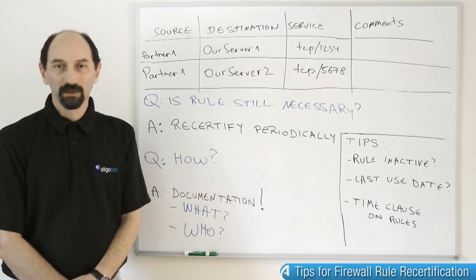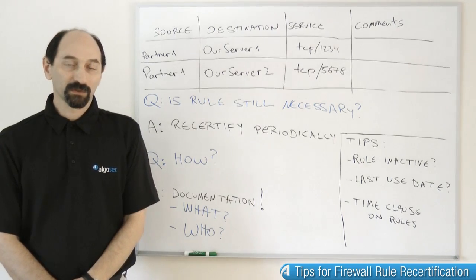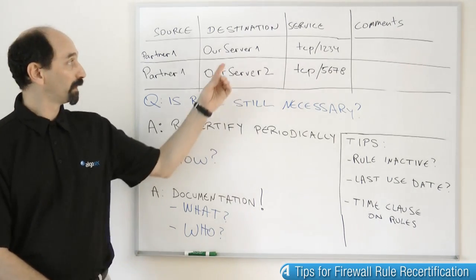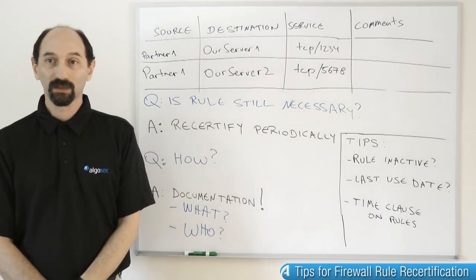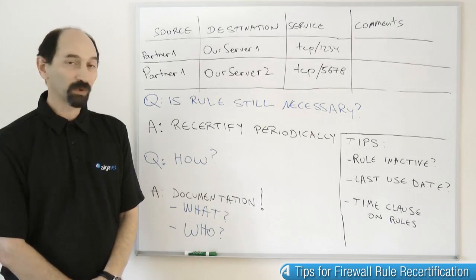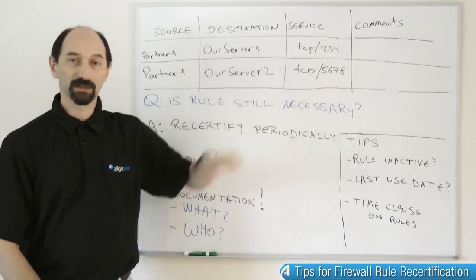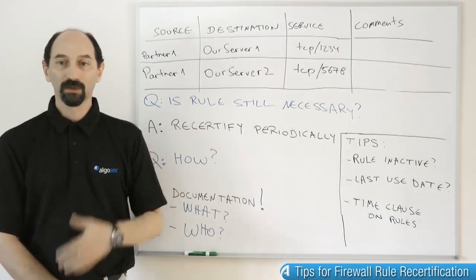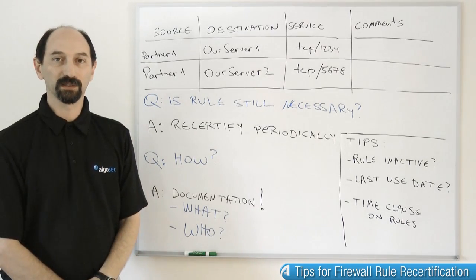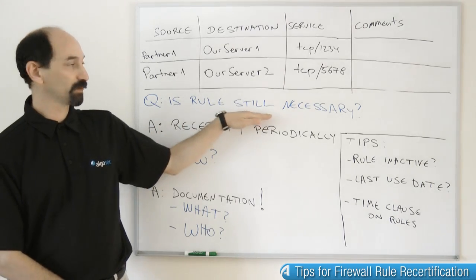Well, why wouldn't it be? There could be many things that cause the rule to become unnecessary. Perhaps the application has been decommissioned. Perhaps one of the endpoints was migrated to a different data center and changed its IP address, so you need a different rule. Perhaps the application has been upgraded and now uses different services and different ports, so you have new rules and can get rid of the old ones. For all of these reasons, you occasionally need to check your rule base and answer this big question: is this rule still necessary?